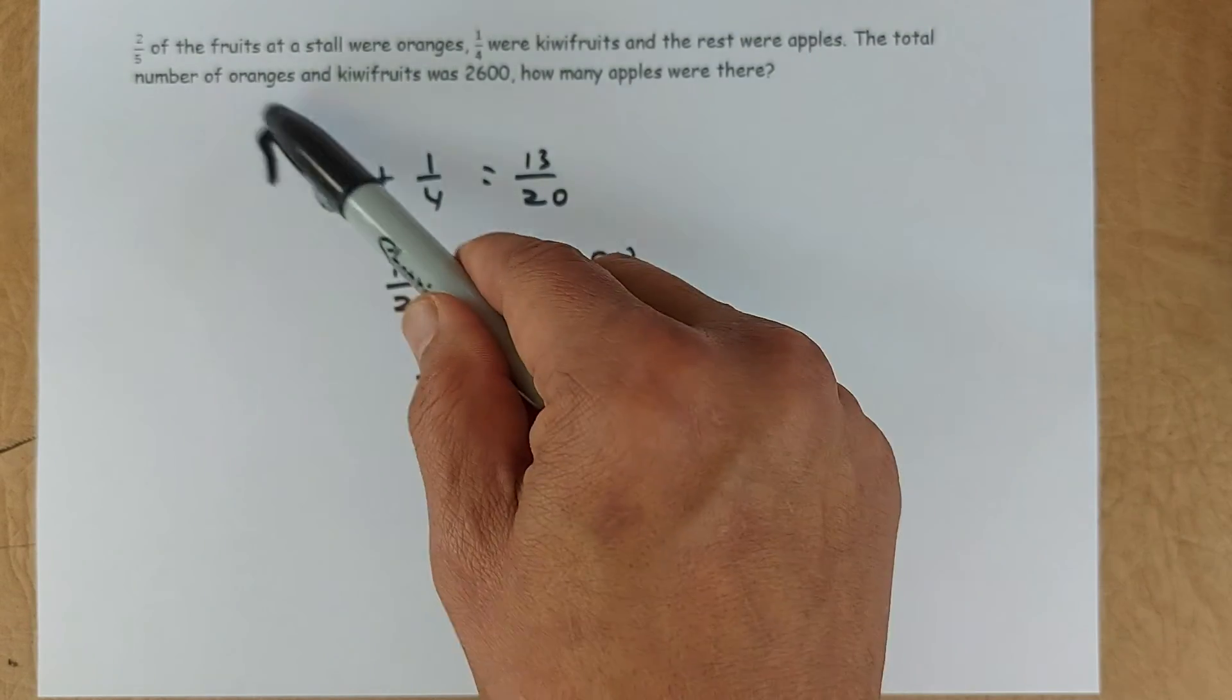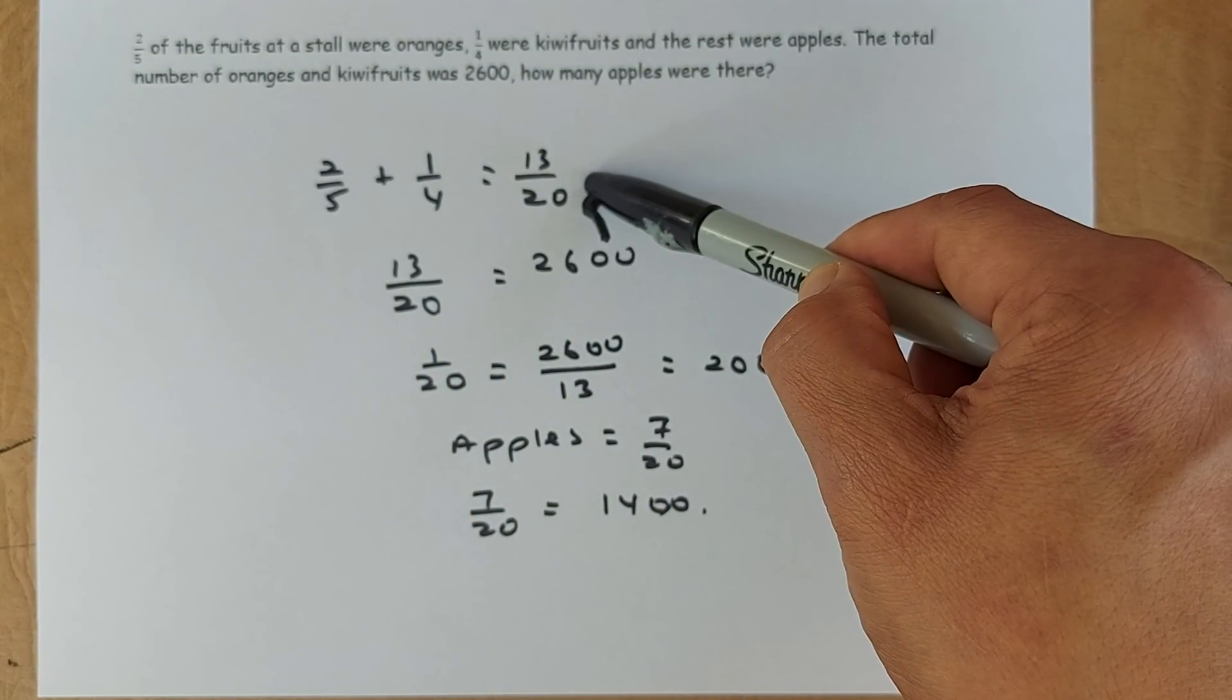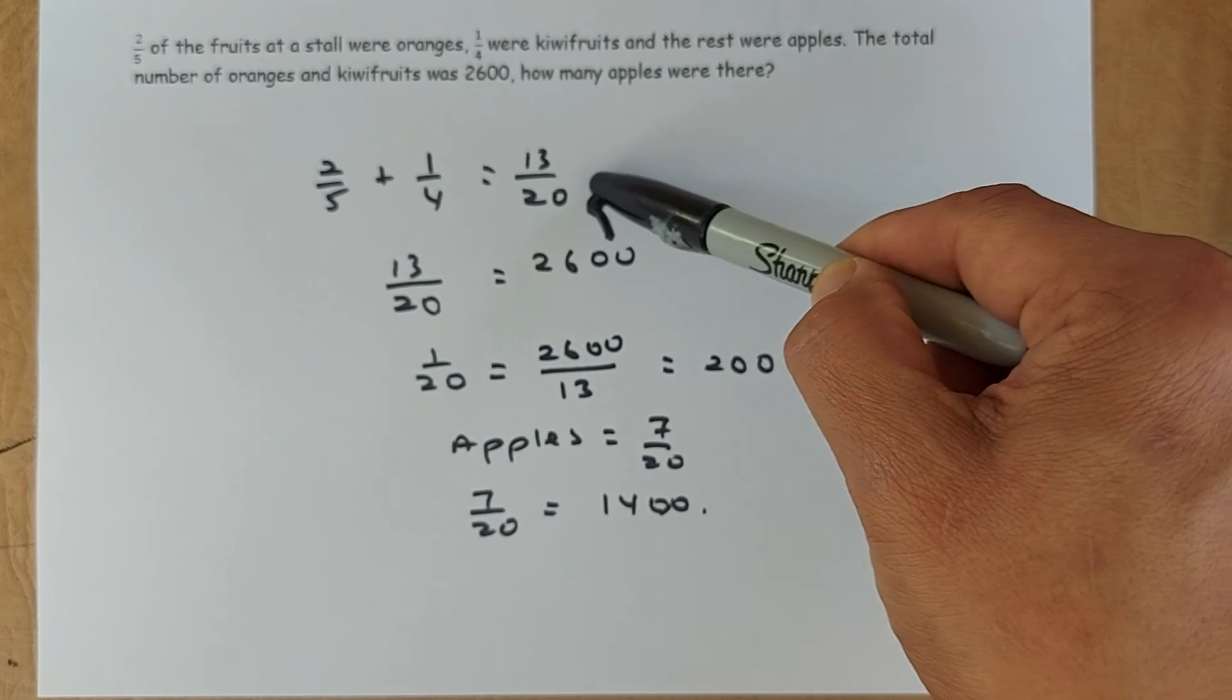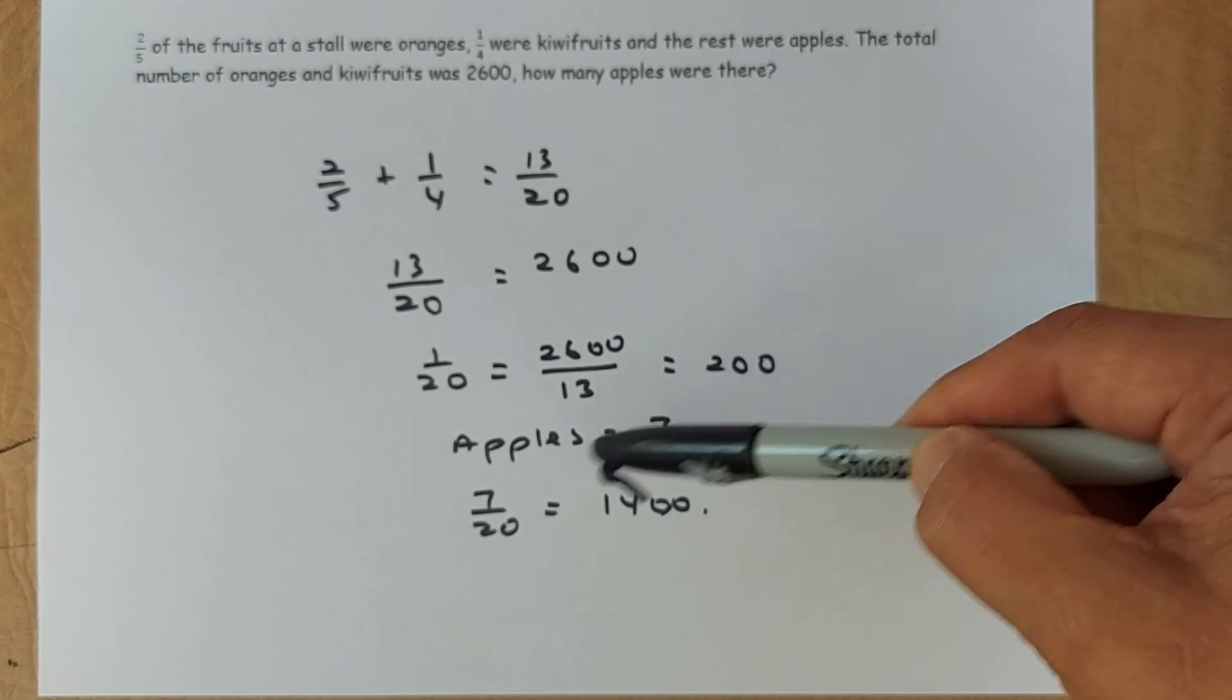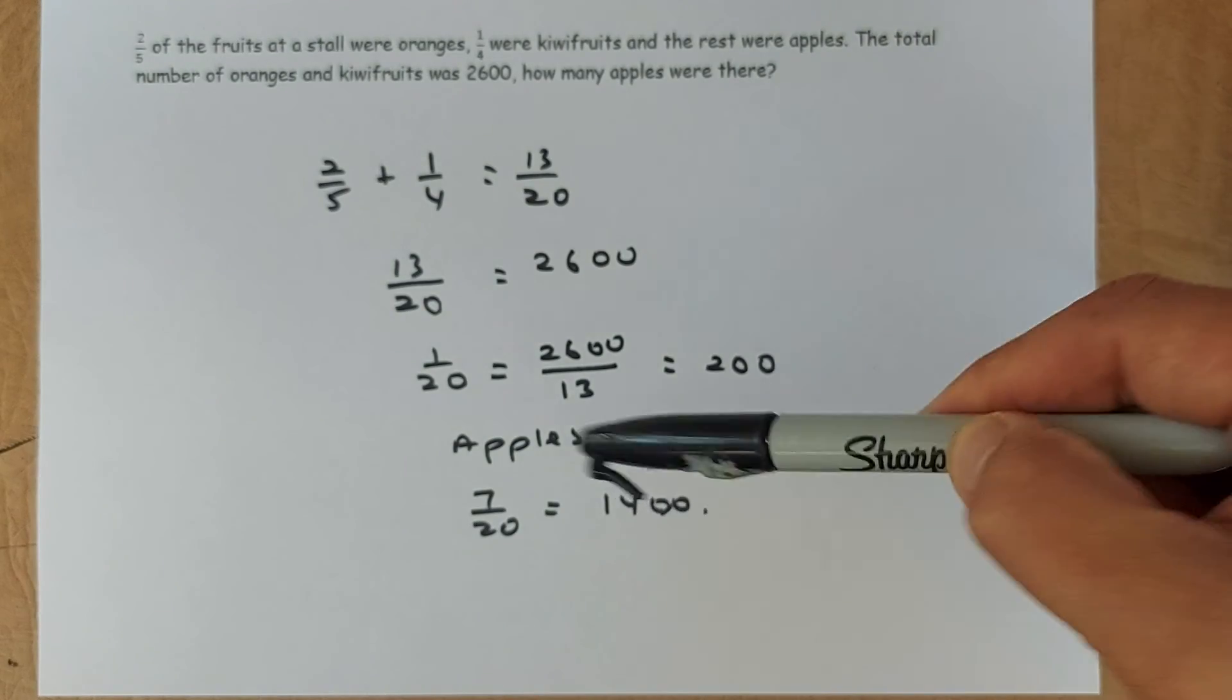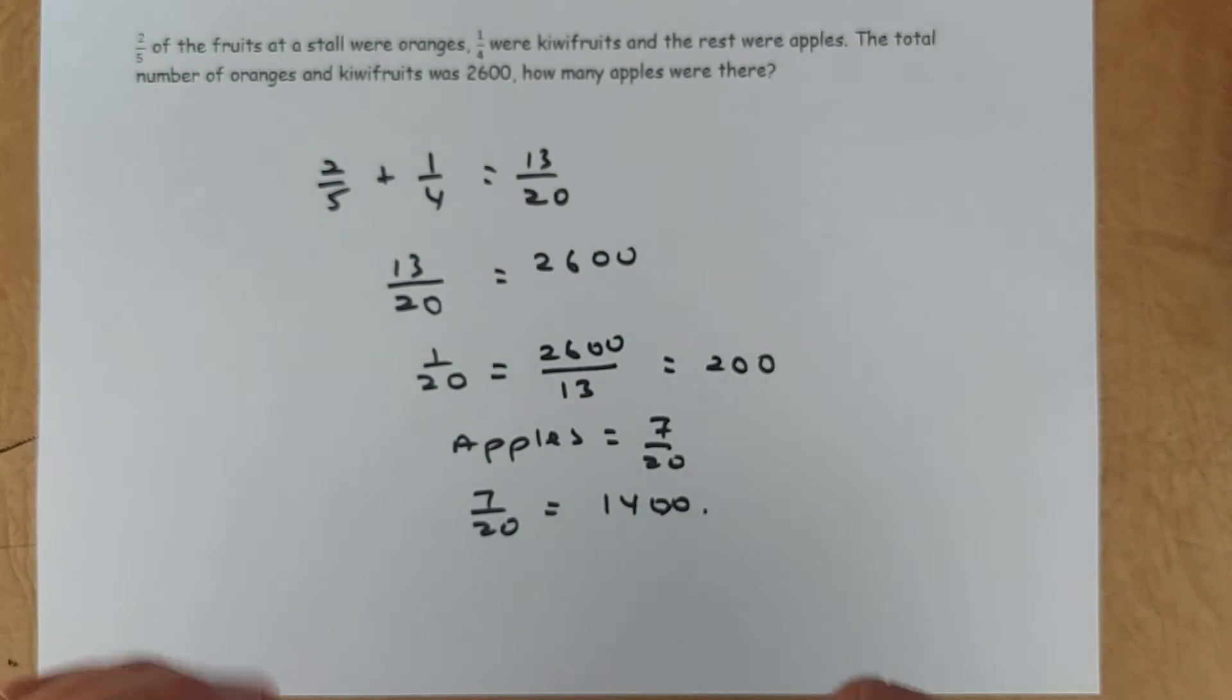And how many apples are there? If there are 13/20 oranges and kiwi fruit, there will be 7 over 20 because the rest were apples. So 7 over 20 were apples. So one part is 200. Seven parts are going to be 200 times 7 is 1,400. And that will give you the final two marks in the exam.